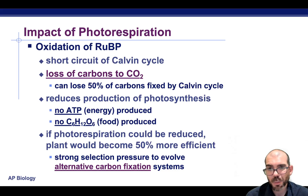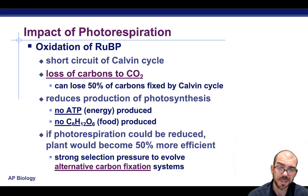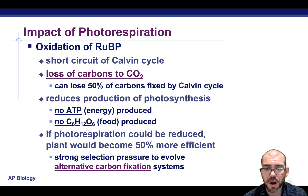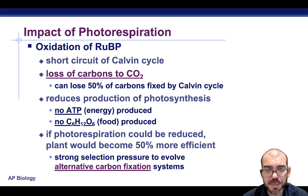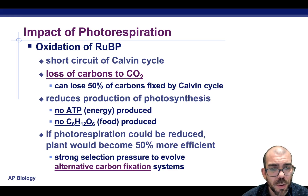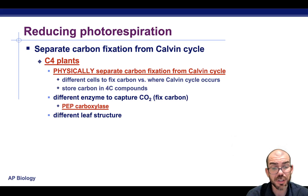One of the impacts of photorespiration is a lot of carbon loss. We can lose up to 50% of the carbons that are normally fixed from the Calvin cycle. It's also going to reduce the productivity of photosynthesis — we're not generating as many ATPs and we're not generating sugar. This can cause plants to be up to 50% less efficient when rubisco grabs oxygen. That's why there's been evolutionary pressure for different plant systems to evolve an alternative — a way to prevent this respiration from the backlog of oxygen in the leaf.